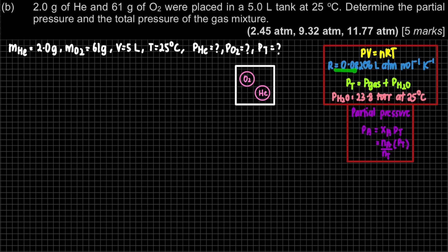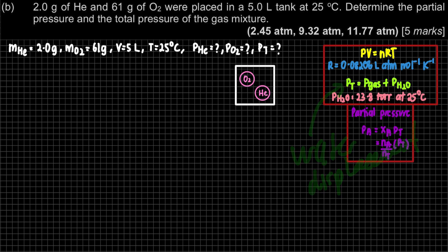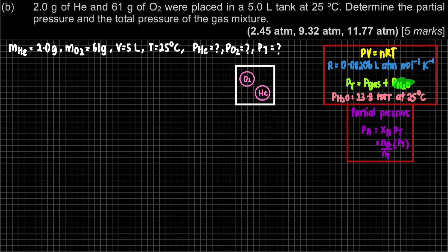You do not have to memorize R — it is in front of your list of constants. There are two values of R; for our syllabus in chapter 5, we use R = 0.0826 L·atm/mol·K. I like to write down the unit for R because it tells us what units PV and nT should be in. There is also a formula: pressure total = pressure gas + pressure H2O, but that is used only for the water displacement method, which does not apply here.